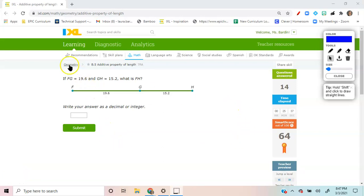Hello, hello geometry students. So this is Geometry B5, Additive Property of Length.